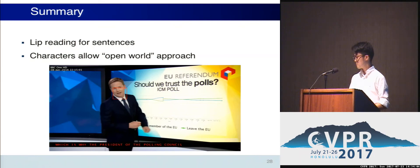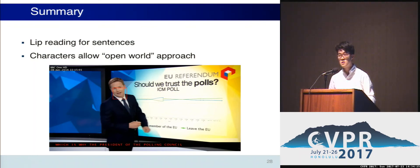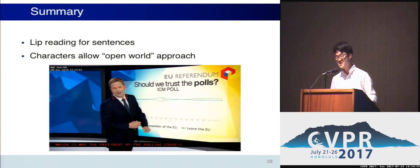Time for a few questions. The first question is about the dataset: how was it ensured that the same people don't occur in both train and test? Some people do appear in both, but given the thousands of speakers involved, it's not believed to matter very much. Another question: since the dataset was all British TV, was it tried on American TV to see if it predicts well? That hasn't been tried yet, but it would be an interesting experiment.